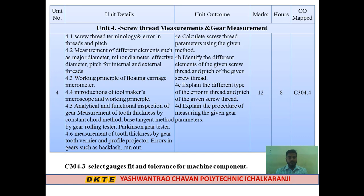Topic 4.6 is measurement of tooth thickness by gear tooth vernier caliper as well as profile projector. We check the gear tooth component and its various parameters using these two instruments and compare their results. Errors such as backlash and runout are also covered. The total marks for Unit 4 are 12 marks with 8 lecture hours.